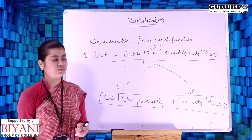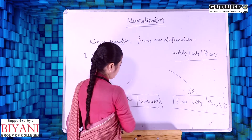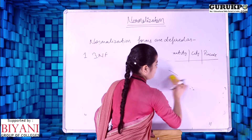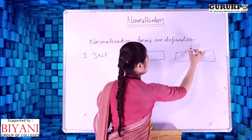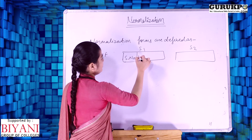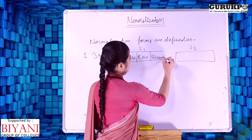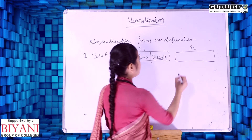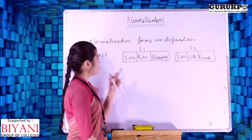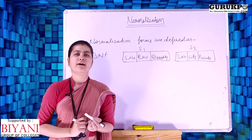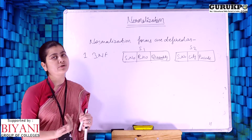After Second Normal Form, we talk about Third Normal Form. From Second NF we have two tables: S1 with serial number, predict number, and quantity; and S2 with serial number, city, and pin code. A relation is in Third NF if and only if it is in Second NF and there is no transitive functional dependency.